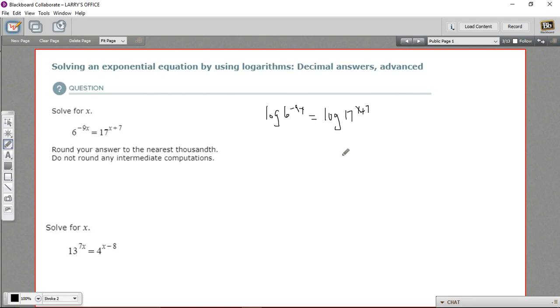Now the reason it's beneficial to take the log here is because these powers can come out by the power property of logarithms. They can be multiplied onto the front of the log. So this is going to be negative 9x times the log of 6, and this is going to be x plus 7 times the log of 17.